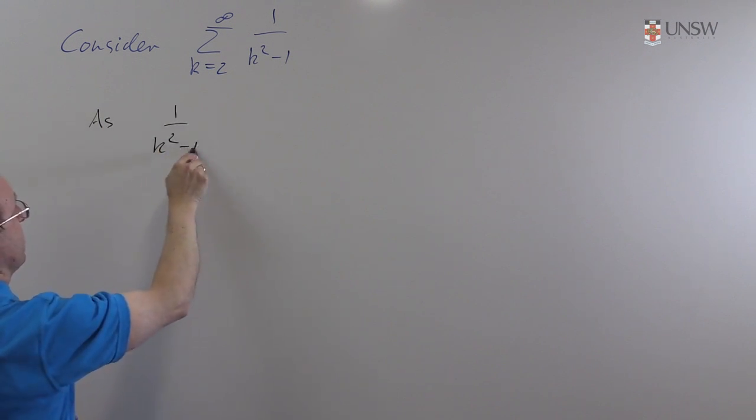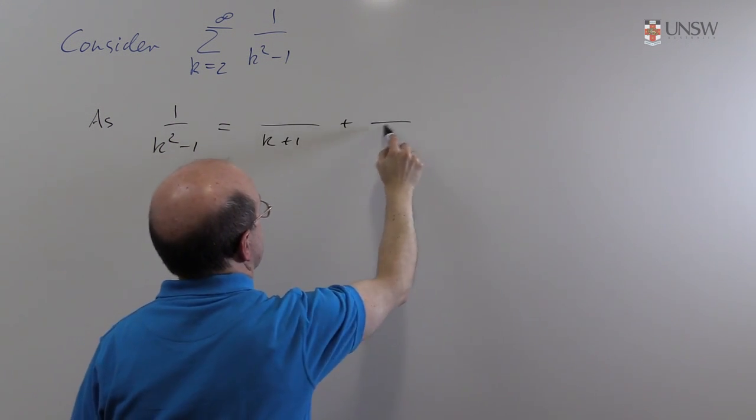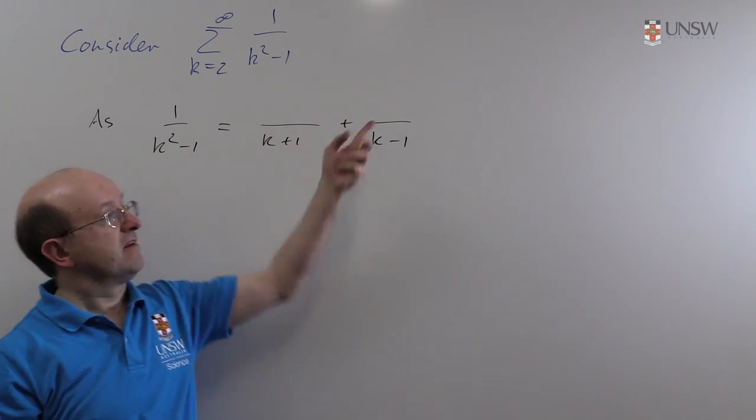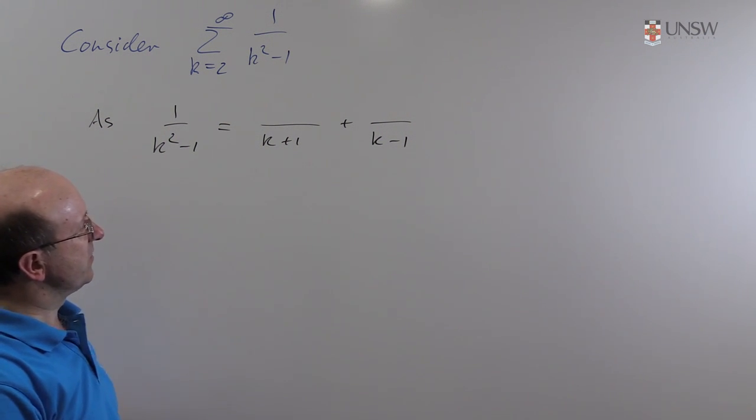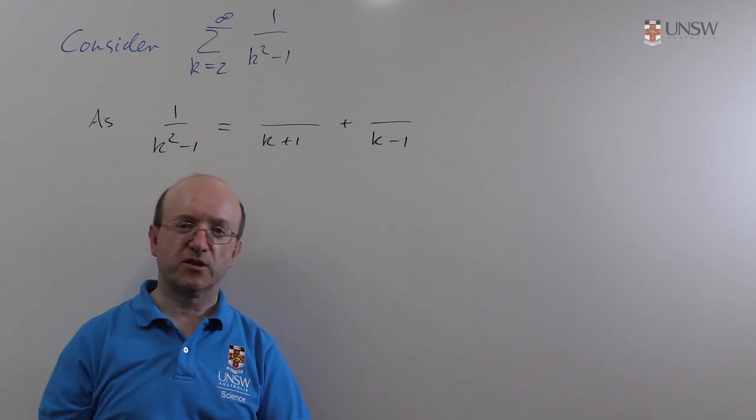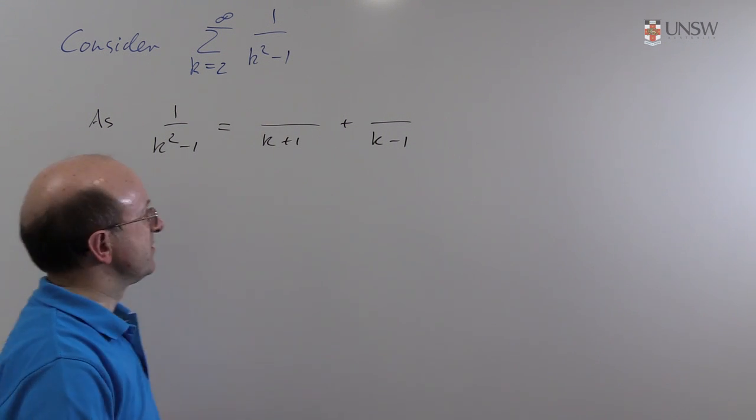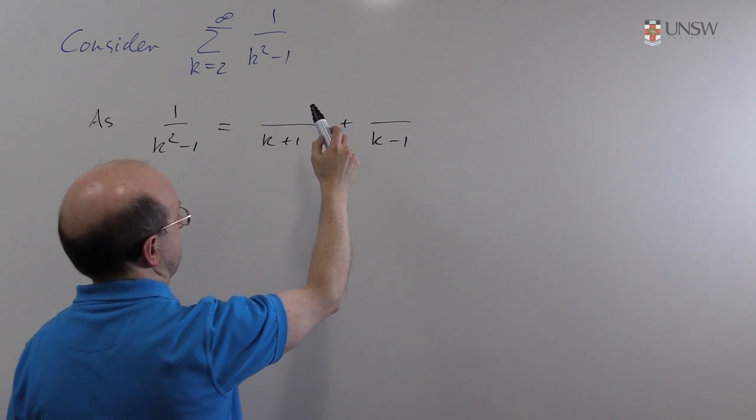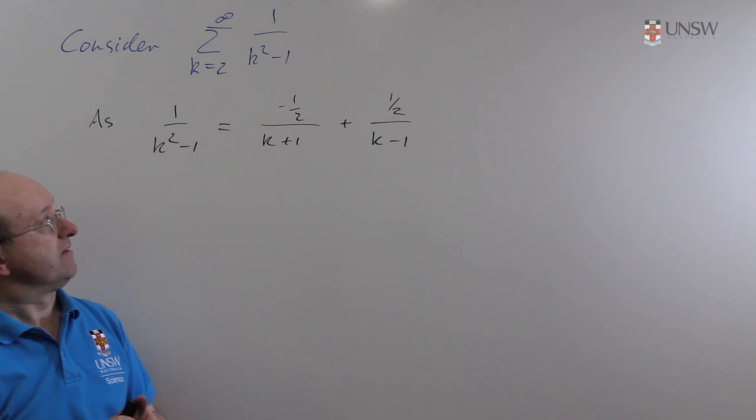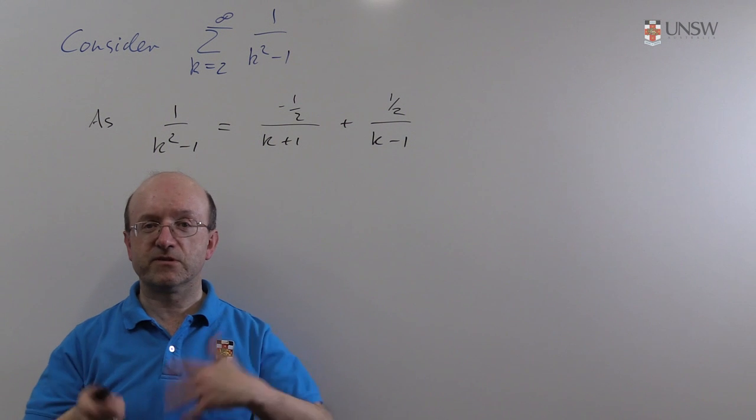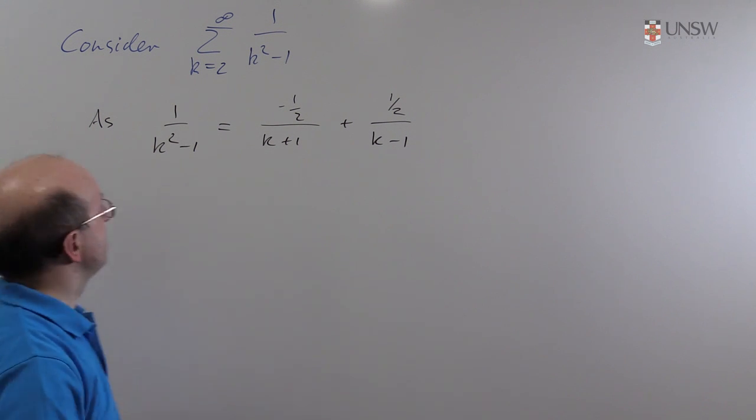1 over k squared minus 1, which of course is k minus 1 times k plus 1. So it's something over k plus 1 plus something over k minus 1. And again, these need to be constants independent of k. That's what we mean by that. And the thing to do is to work out what they are. You could put an a and a b, cross multiply, substitute 1 and minus 1 and sort them out. But if you've been doing this for long enough, it's not too difficult to see. In fact, what you want here is minus a half here and a half there. Put it over a common denominator. Partial fractions are always easy to check.